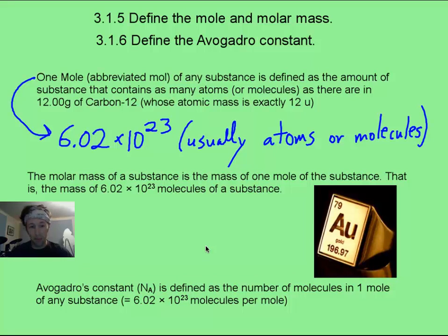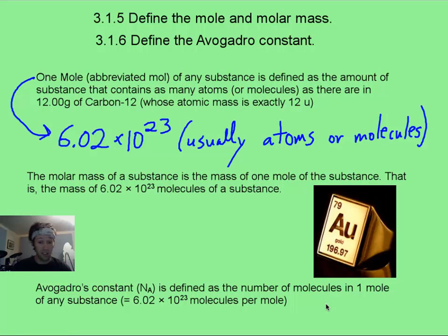And then the simplest definition is just Avogadro's constant, which is this giant number, and that tells you how many molecules are in one mole of a substance. Avogadro is an actual scientist. It is not related to the delicious green fruit, which is an avocado. I don't know that there is an avocados constant out there.